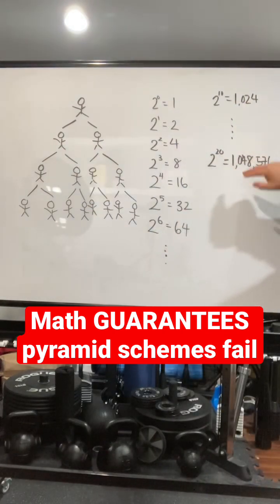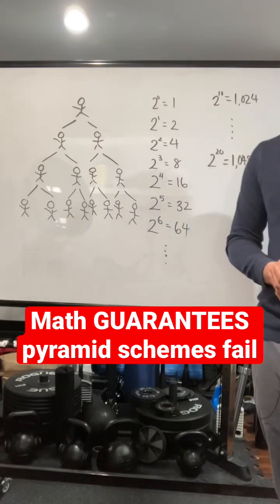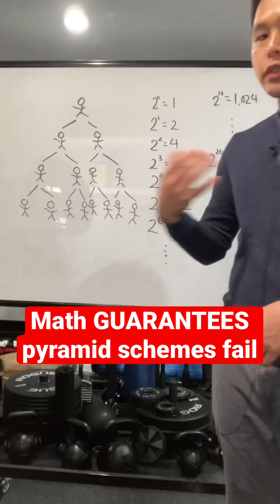Now, from there, you go to round 20, you need 1,048,576 new people. And then round 21, all of a sudden, you double that.